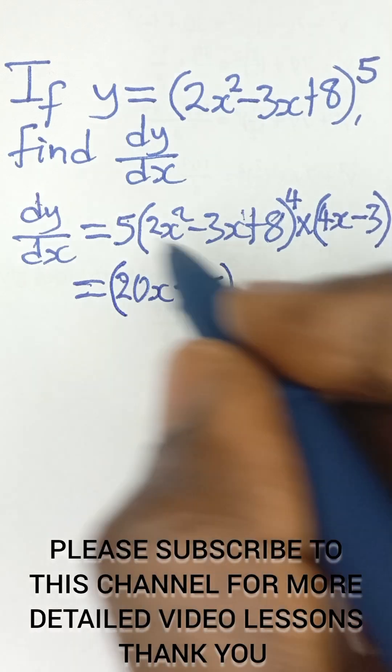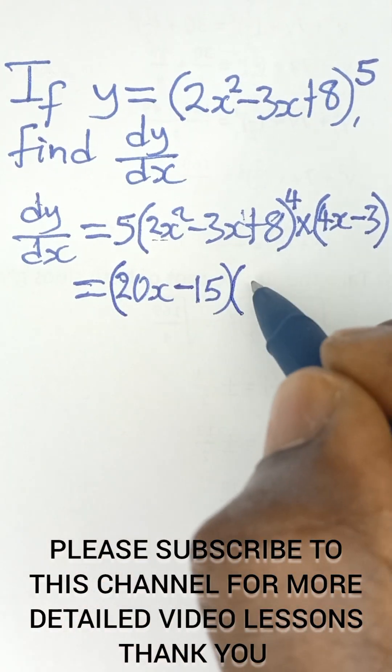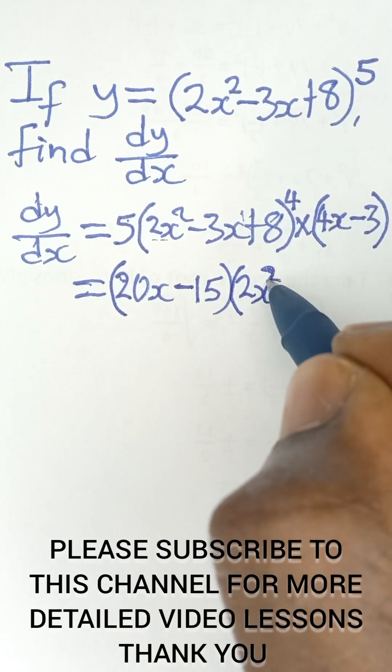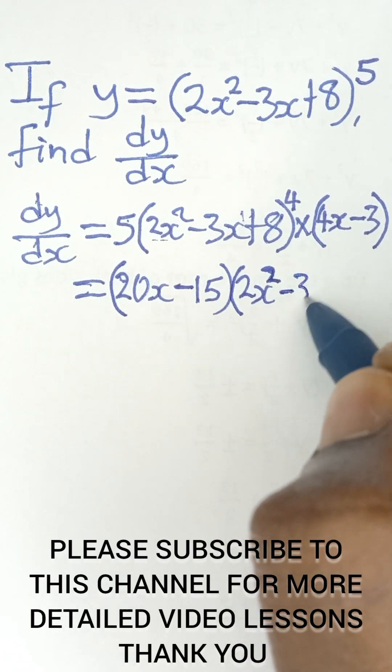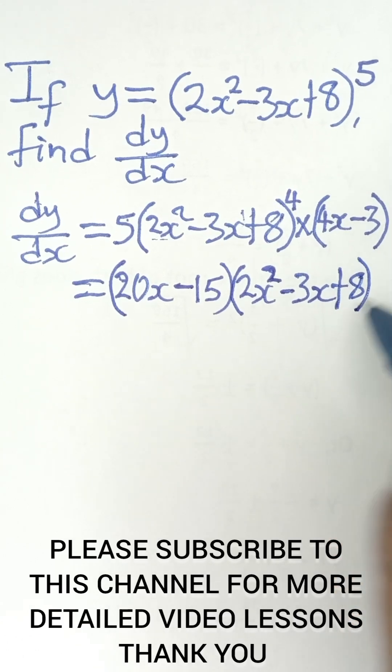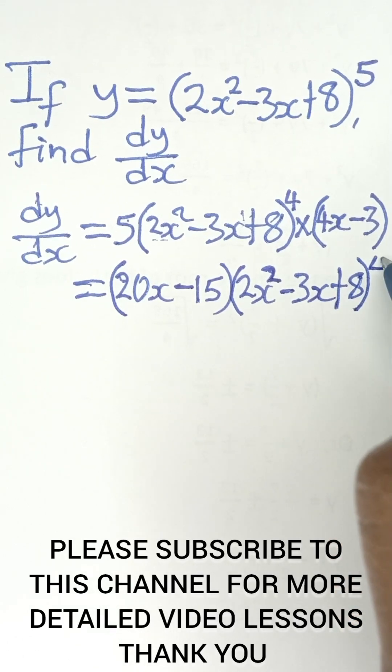And then, now we multiply what we have here. So it becomes 2x squared minus 3x plus 8, all raised to the power of 4.